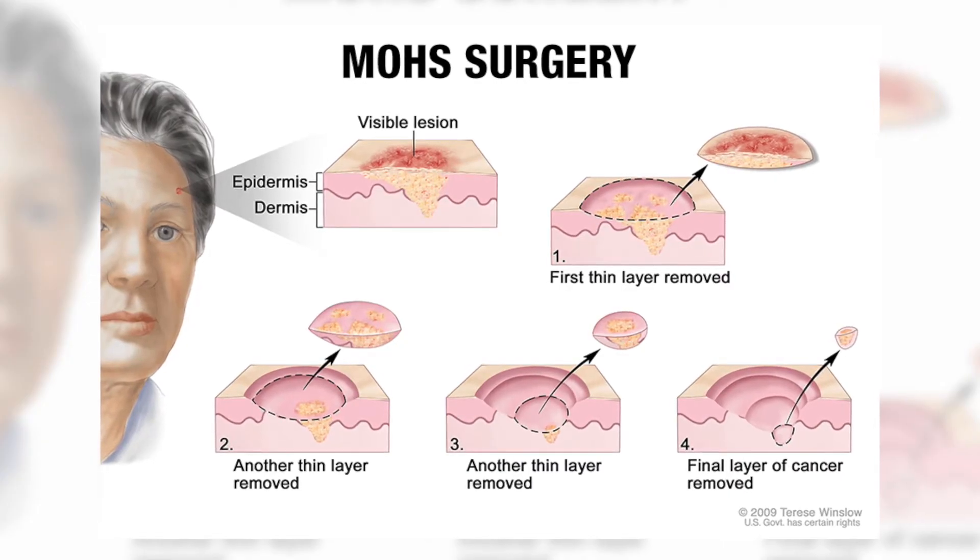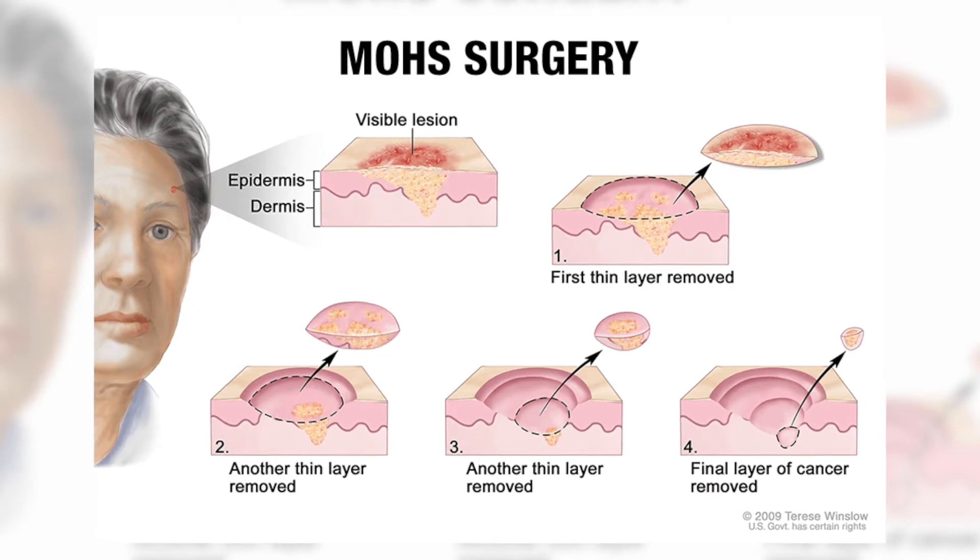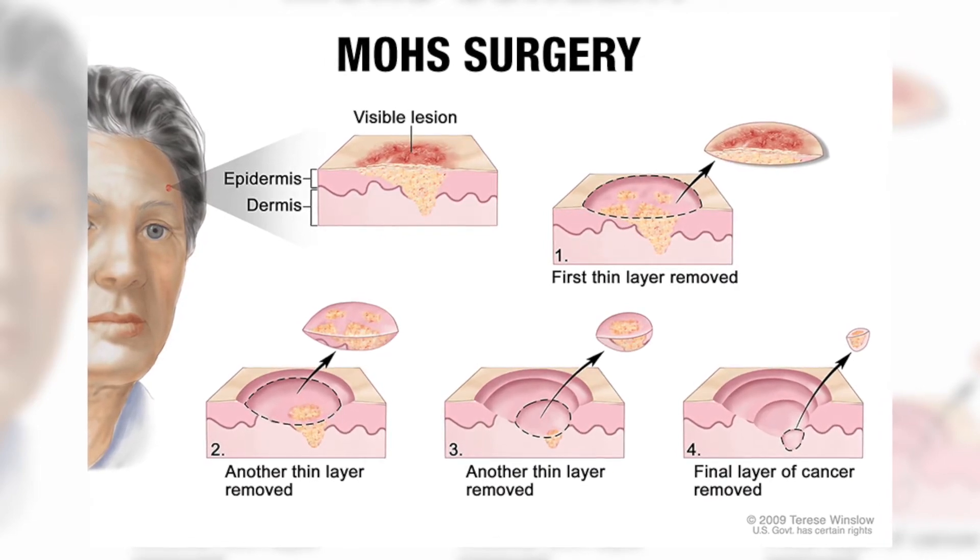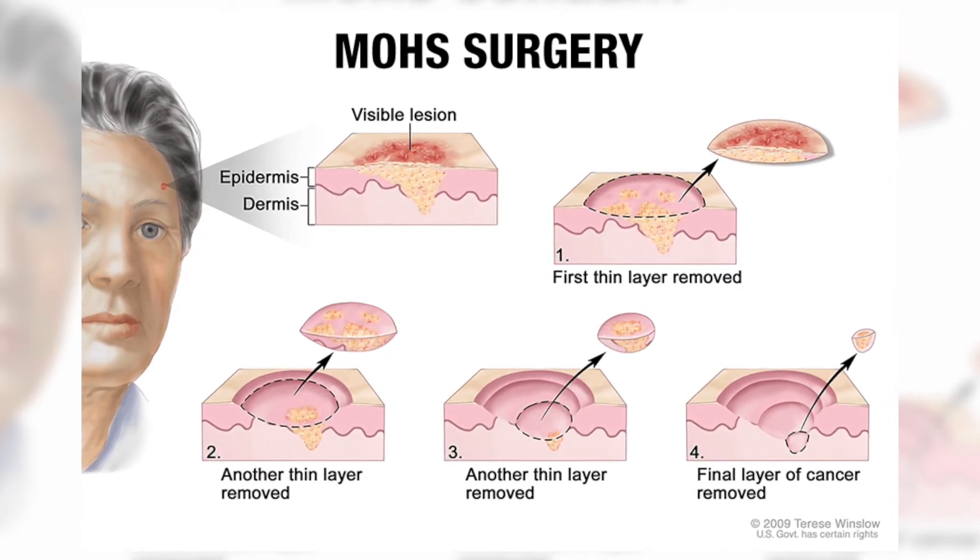There are two ways of doing this: either by a Mohs technique — M-O-H-S — which is a person's name, a dermatologist who developed this many years ago, or by a technique called a frozen section. The Mohs technique is done by the dermatologist. They remove the tumor and then they refer the patient to me for closure if it's around the eye or facial area where they're not comfortable closing, and as an oculoplastic surgeon I'm reconstructing the area.